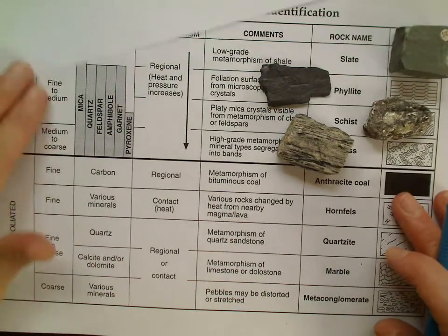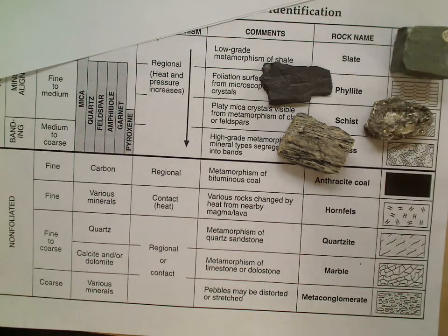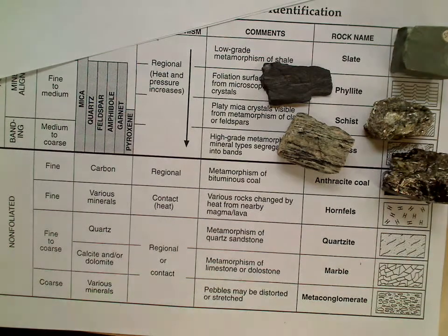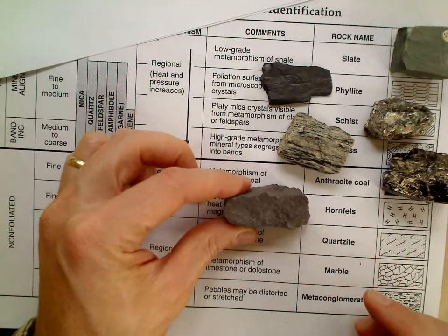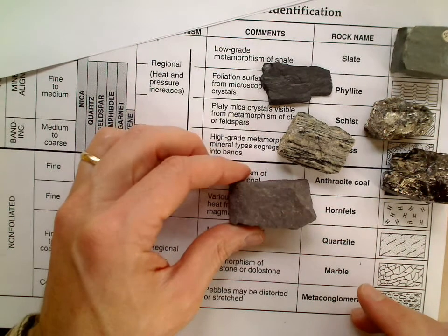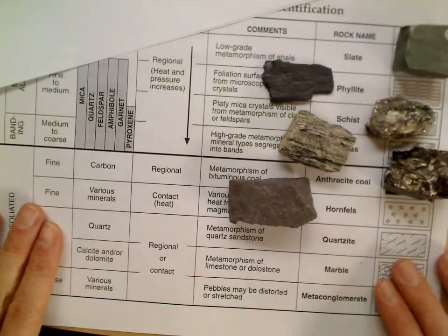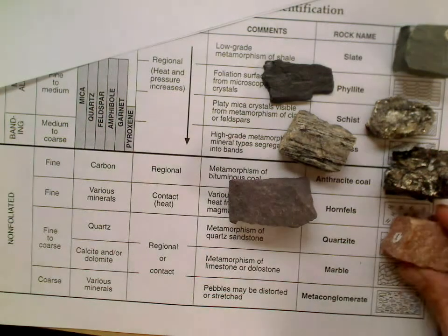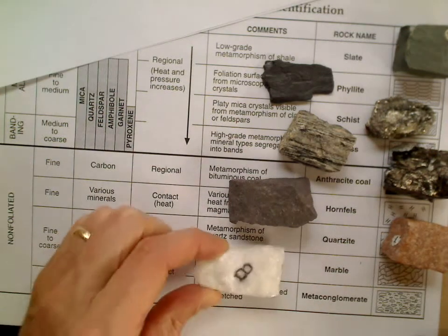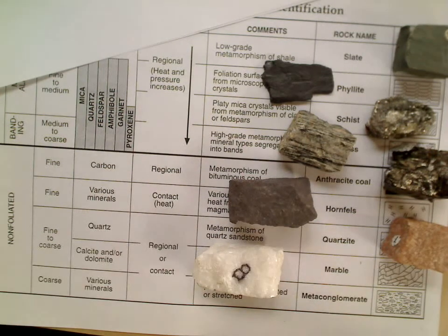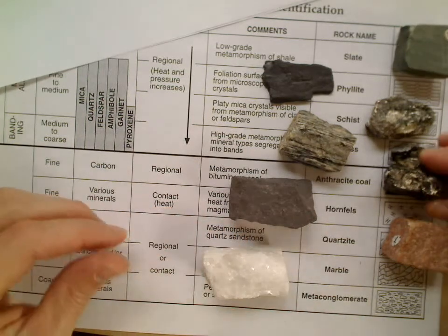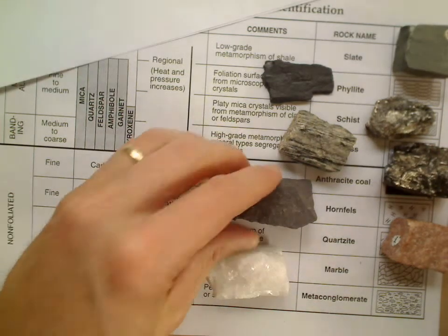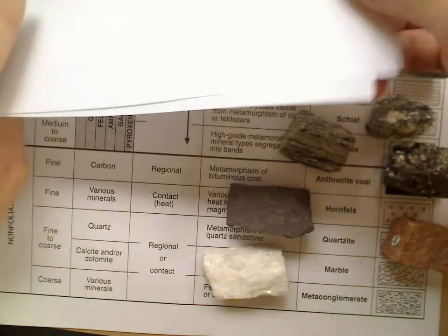These are all regional metamorphisms. The non-foliated rocks at the bottom are a little harder to identify, but I'll put them out anyway. Anthracite coal, hornfels, quartzite, marble, and metaconglomerate — I don't have my metaconglomerate piece with me, sorry. Let's start with anthracite coal.